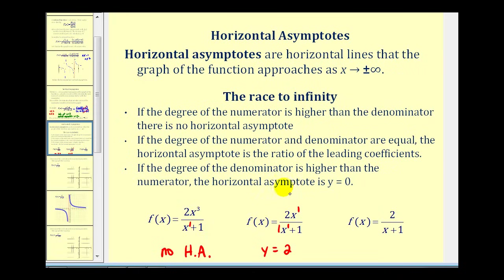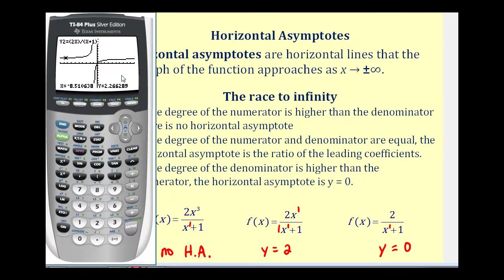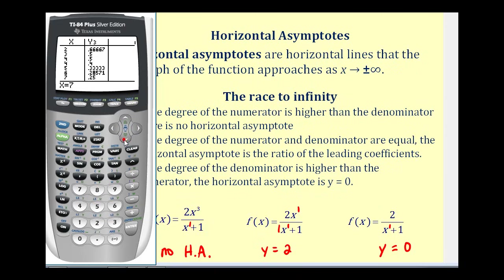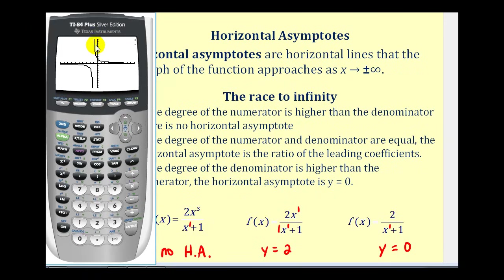Lastly, if the degree of the denominator is higher than the degree of the numerator, the horizontal asymptote will be y equals zero. In this example, the numerator has degree zero and the denominator has degree one. As x increases without bound, the numerator stays at two while the denominator increases without bound, so the function value approaches zero — making y equals zero the horizontal asymptote. On the graphing calculator with y3, the table shows y values quickly approaching zero as x increases, and the graph confirms this behavior in both directions.